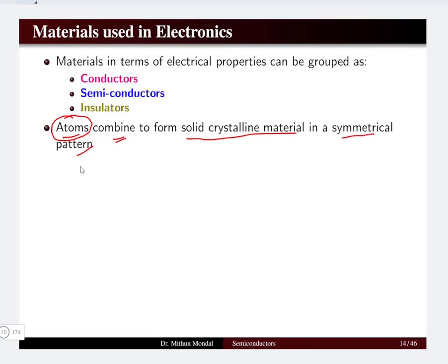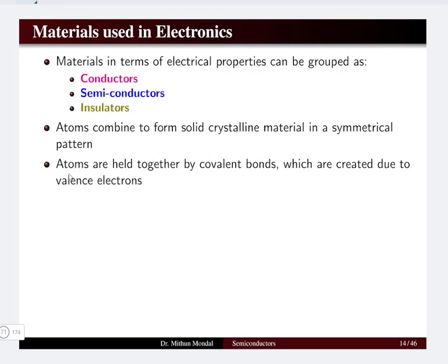When atoms combine they form a solid material. In a particular material there will be so many atoms which are held together by a bond known as the covalent bond, and these are created due to the valence electron. Valence electrons are the electrons present in the last shell of any particular atom, and different atoms of a crystal are held together by a covalent bond.